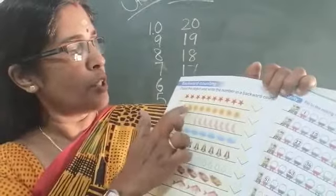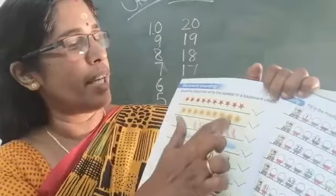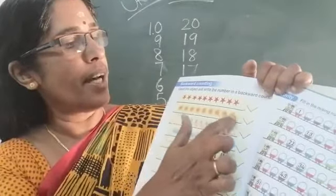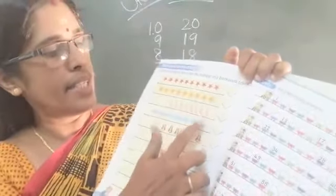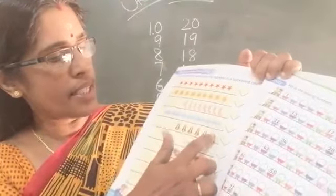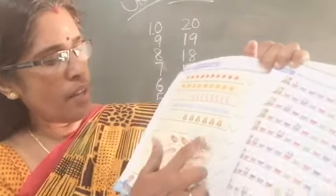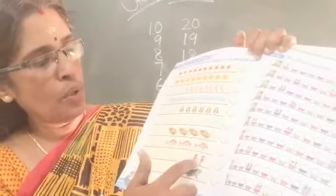Next picture: 1, 2, 3, 4, 5, 6, 7, 8, 9. Next: 8, 7, 6, 5, 4, 3, 2, 1.